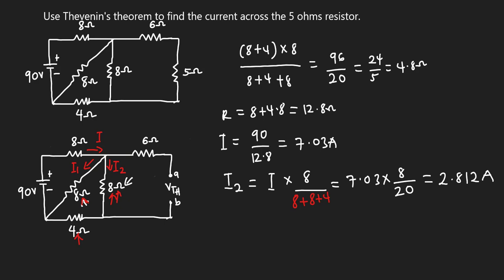Now we can find the voltage drop across the 8 ohms resistor. Naming the nodes C and D, Vcd = 8 × 2.812 = 22.496 volts. This is the same as Vth. Now we know the value of Vth, so we move on to finding Rth.